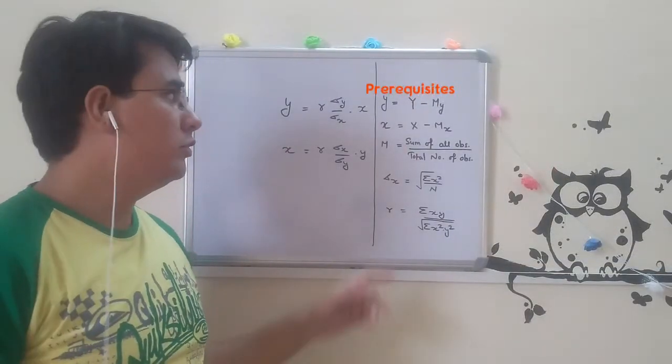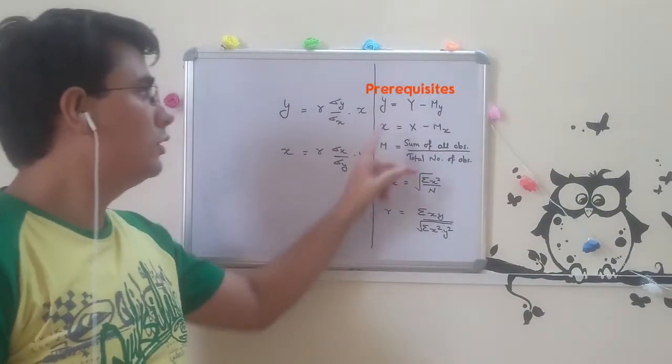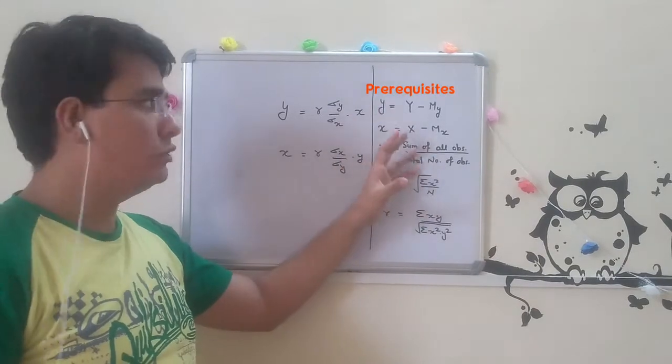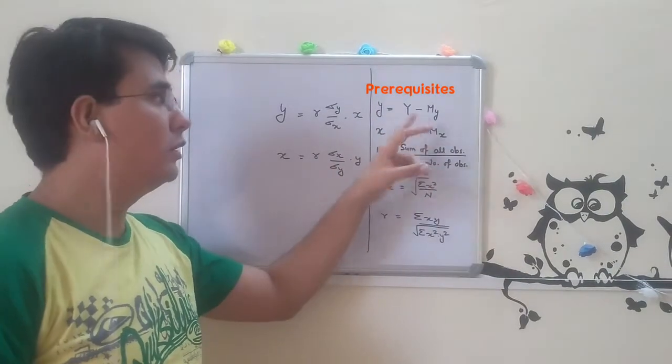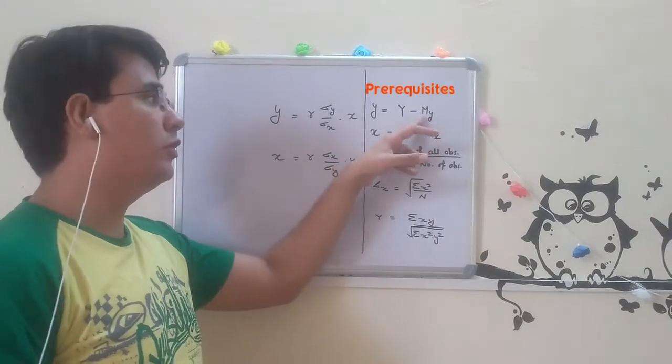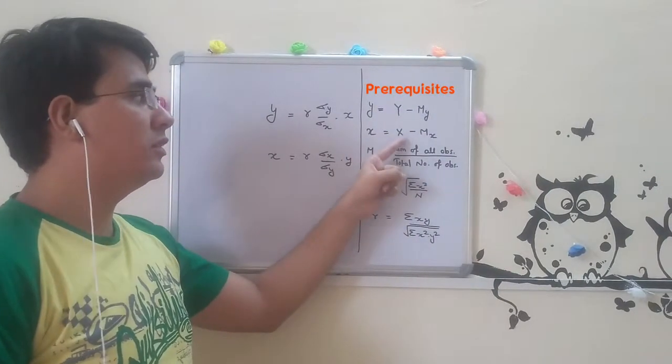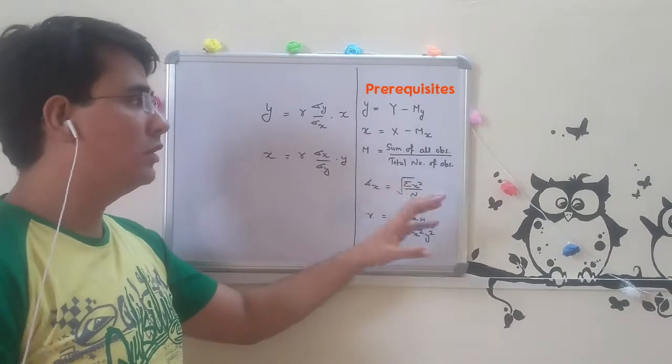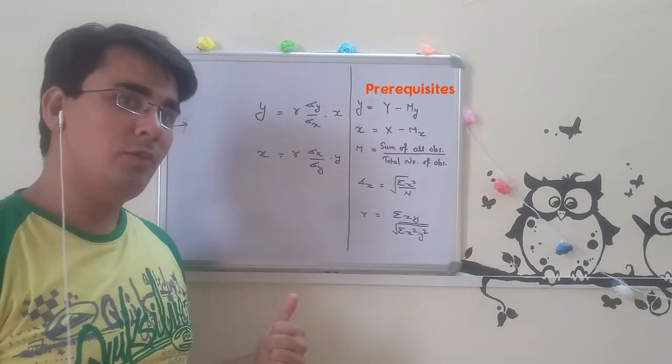For applying this formula, we need to know a few things. Small y means deviation of y from its mean, so y minus mean of y. Small x means x minus mean of x. We will try to understand with the help of an example.